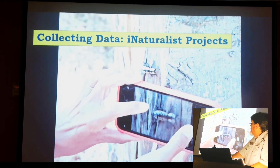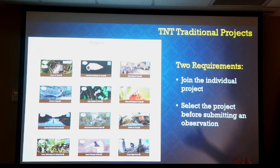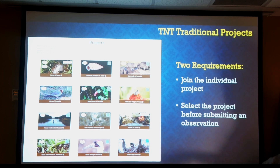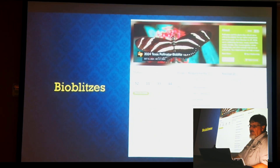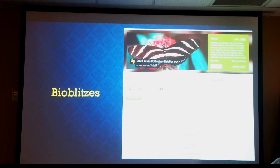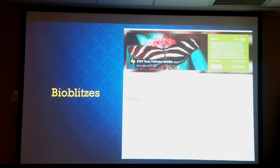In terms of collecting data, there are different ways to do it. You can submit through a project like ours — the tricky part is you have to join the project and then physically submit the observation to it. It's a little harder to do but gives us data we can't get otherwise. You can also participate in a bio blitz — for example, starting October 11th this year is our annual Texas Pollinator Bio Blitz, where we're asking people to go out over a two-and-a-half week period and take pictures of native plants and the pollinators visiting them.